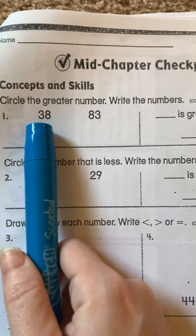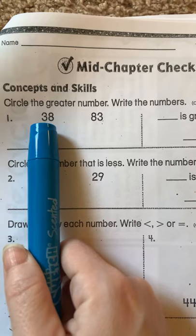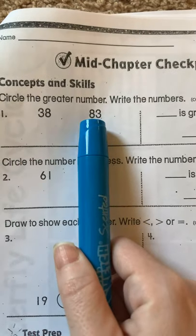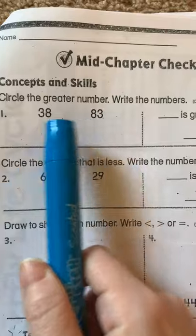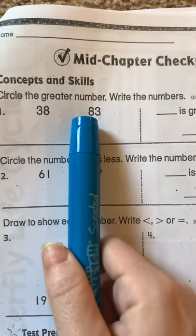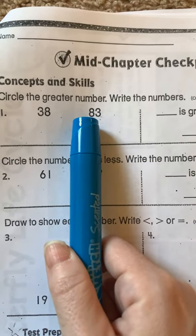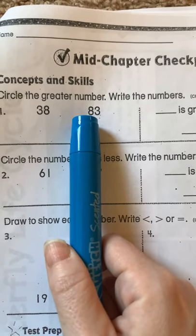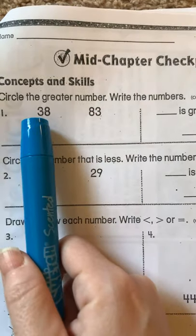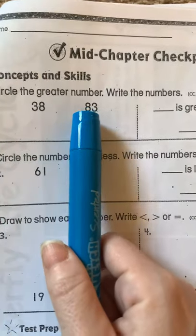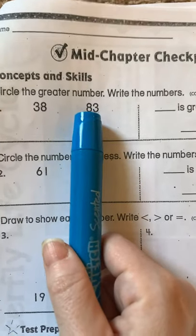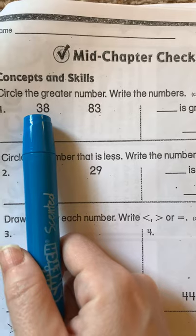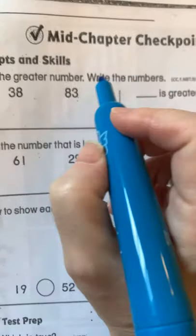So first, we're going to look at the tens column. Three and eight. Okay, are they the same? Three, eight? No, they are different. So we have to look at them now to see which one is greater, which one is bigger. Is three bigger than eight or is eight bigger than three? Yep, eight is bigger than three.